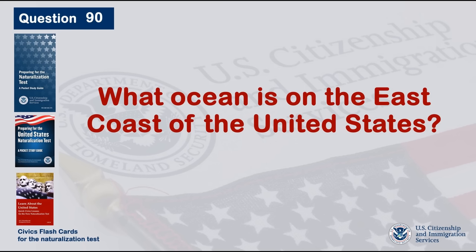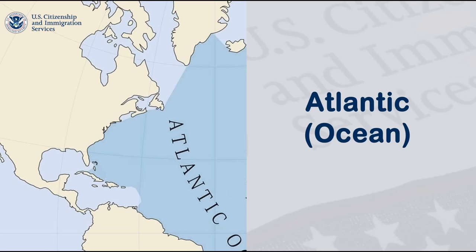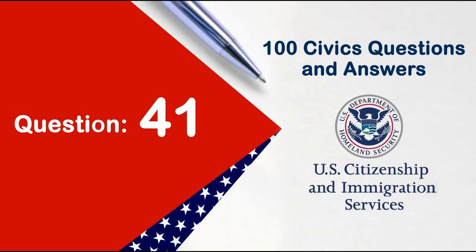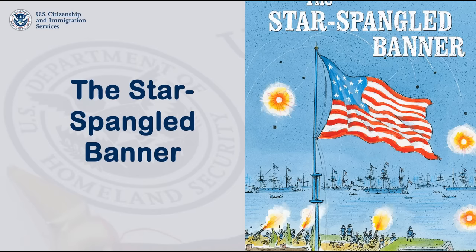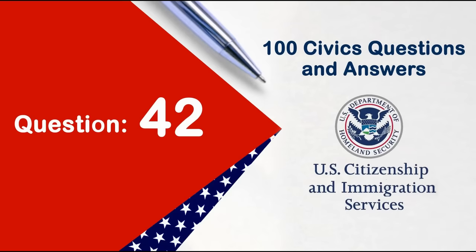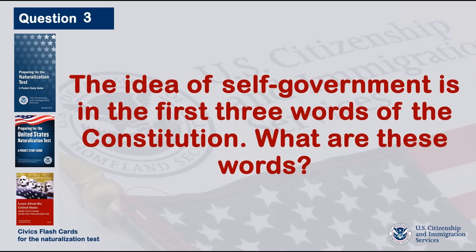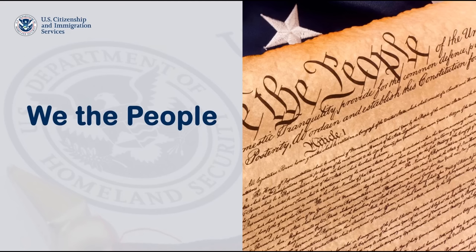What ocean is on the east coast of the United States? Atlantic Ocean. What is the name of the national anthem? The Star-Spangled Banner. The idea of self-government is in the first three words of the Constitution. What are these words? We the people.